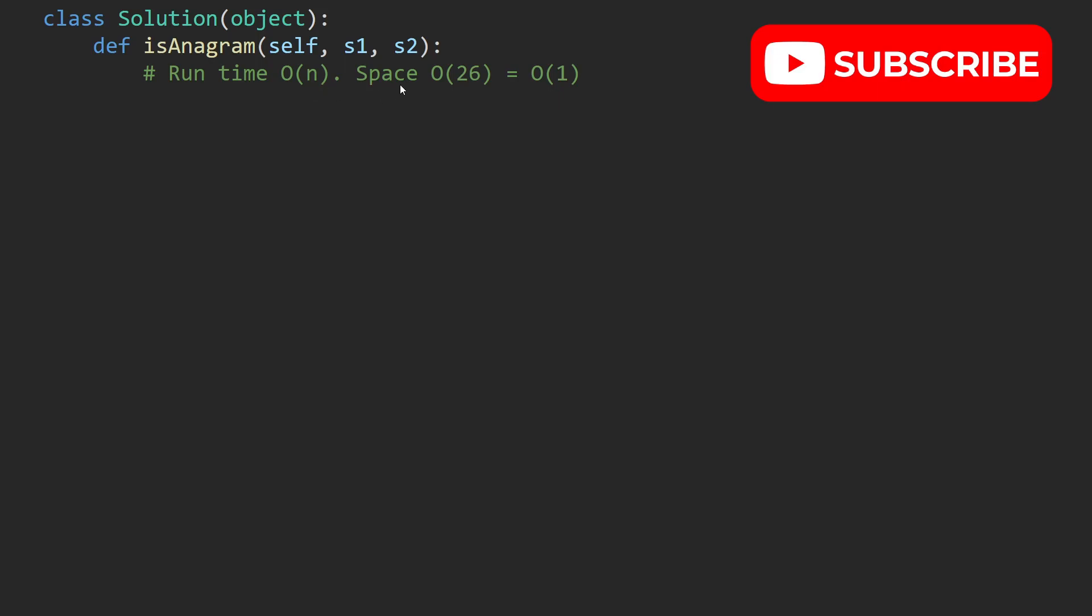And we also create an array of size 26. So O(26) is equivalent to O(1), which is constant time. Now the first step is to determine the number of letters, and that's 26.